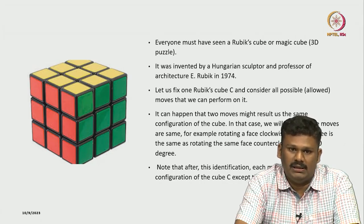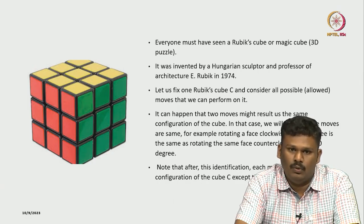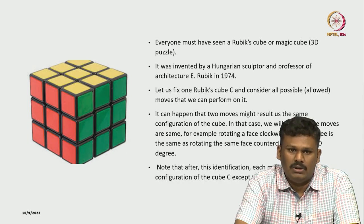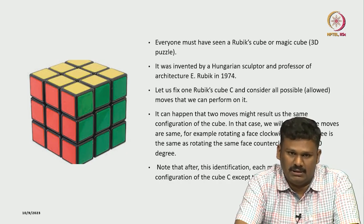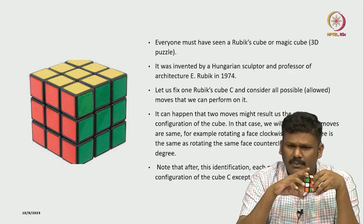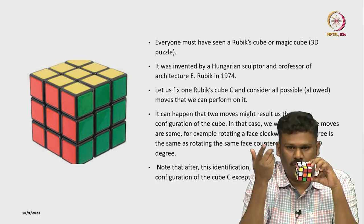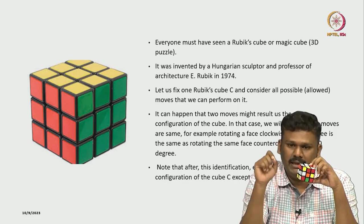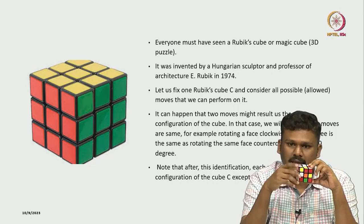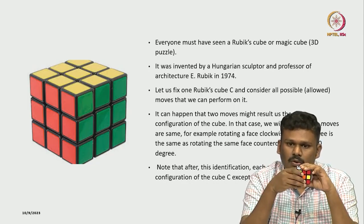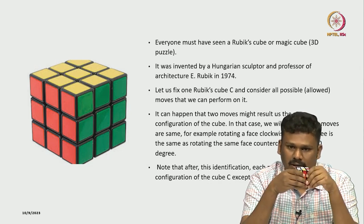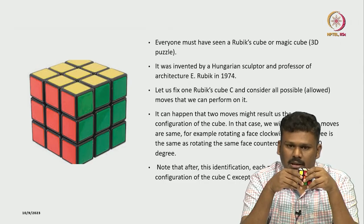This is where group theory is hidden. For each move you perform on the Rubik's cube, you have what is called an inverse move. If you start with the ideal configuration, perform many random moves and reach some configuration, then by reversing - if you write down the moves performed and reverse them step by step - you will be able to get back to the original ideal configuration.